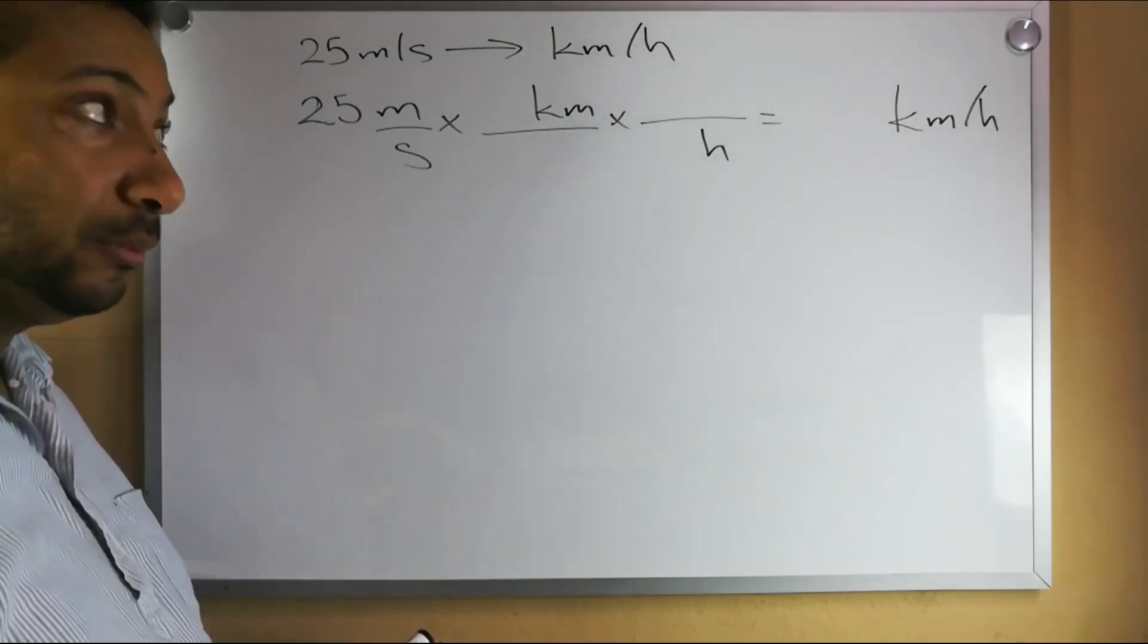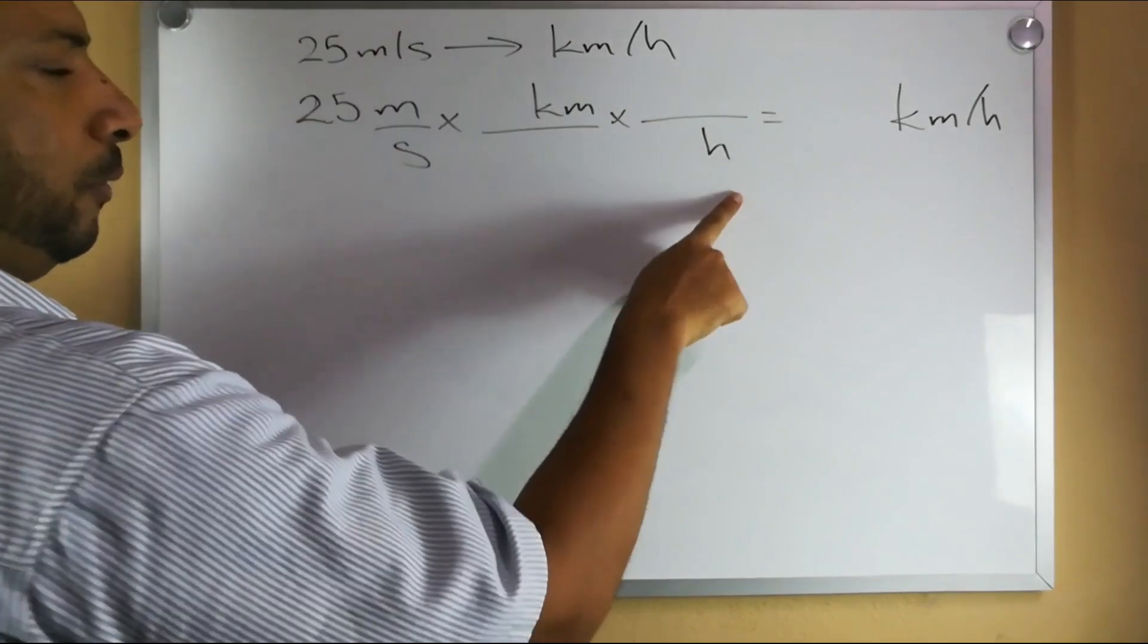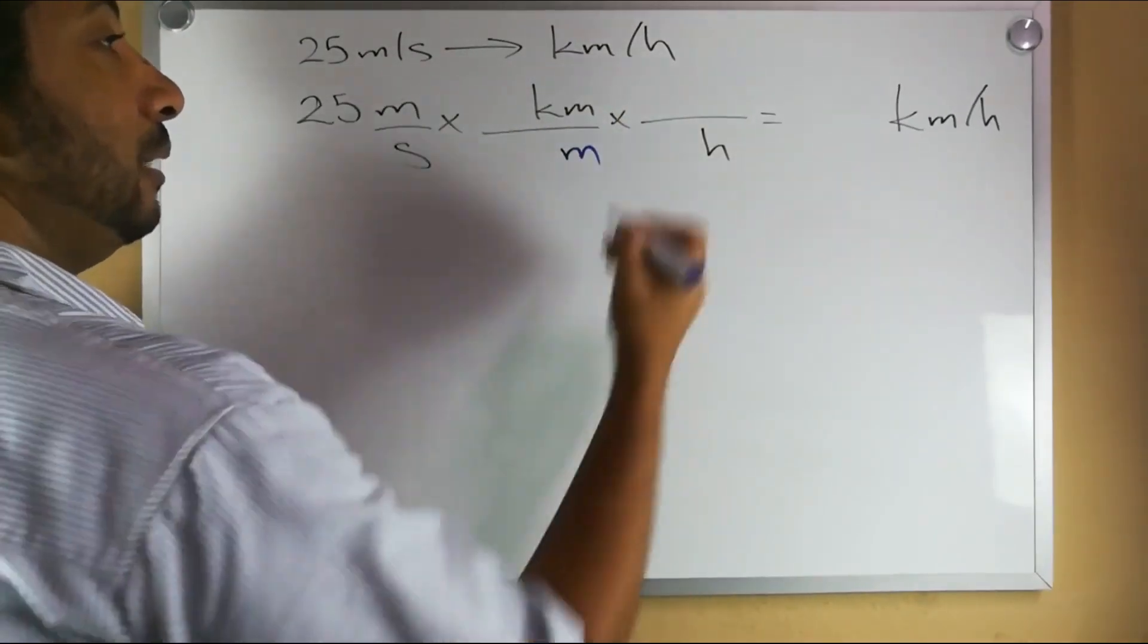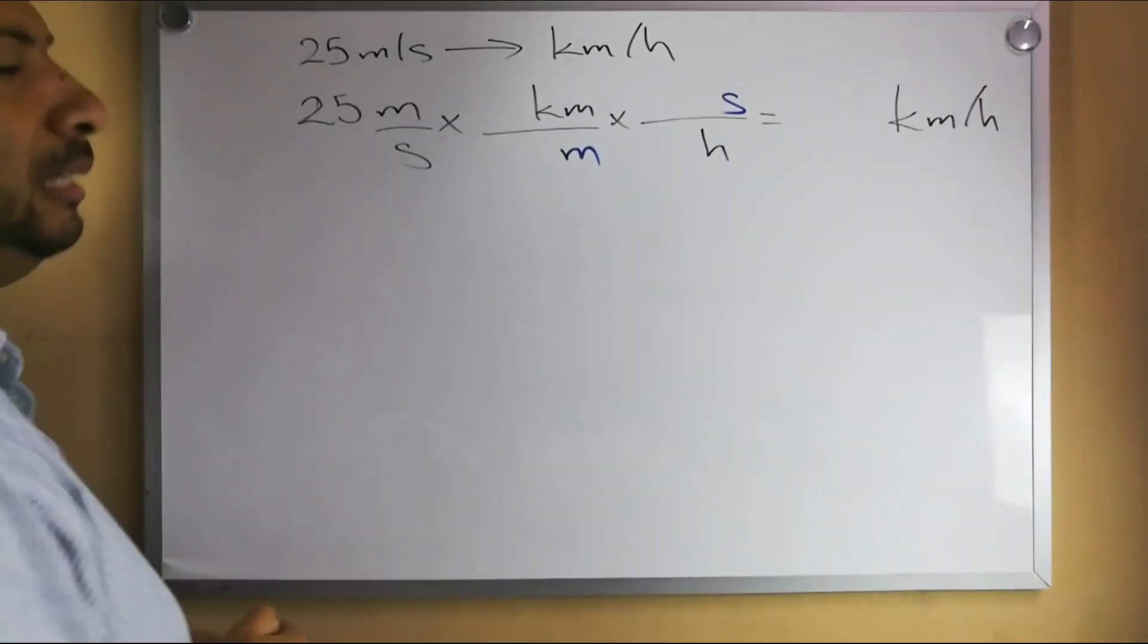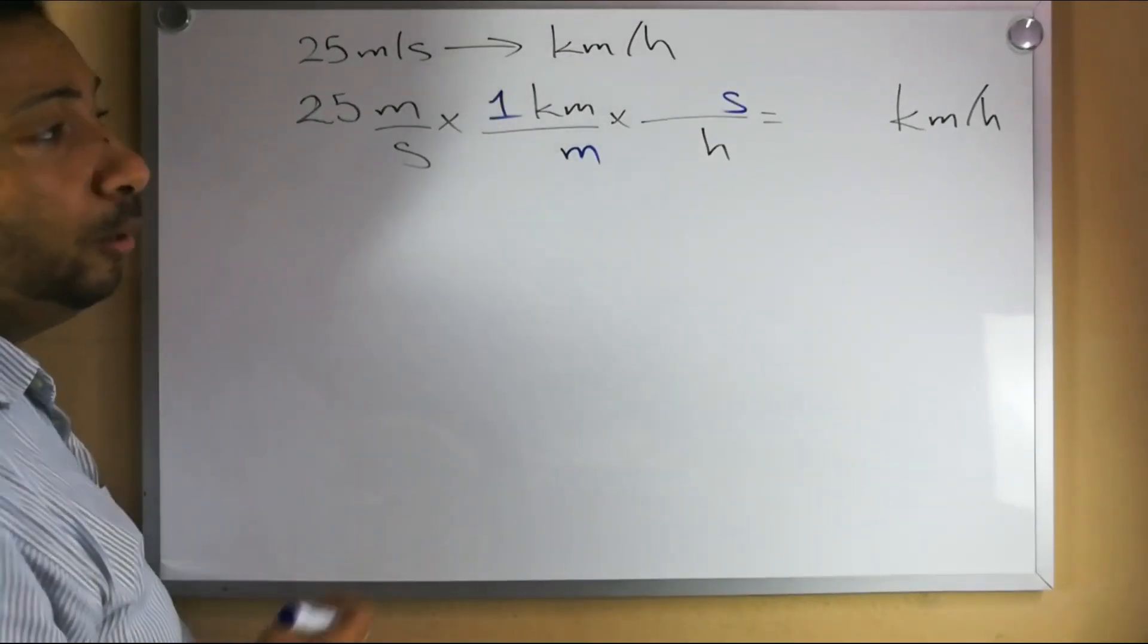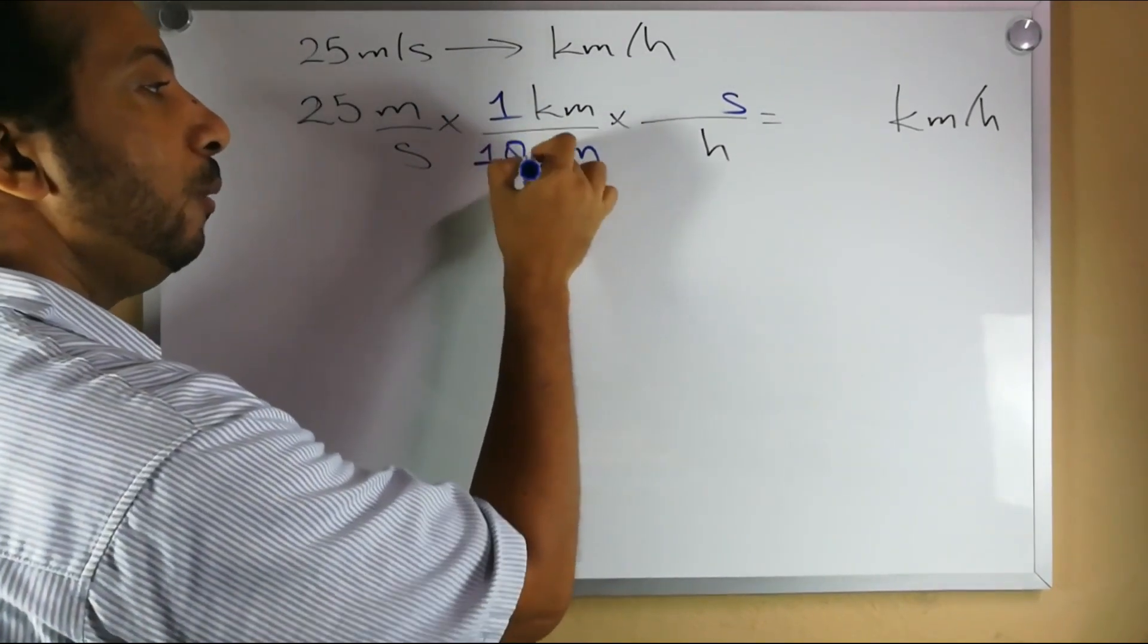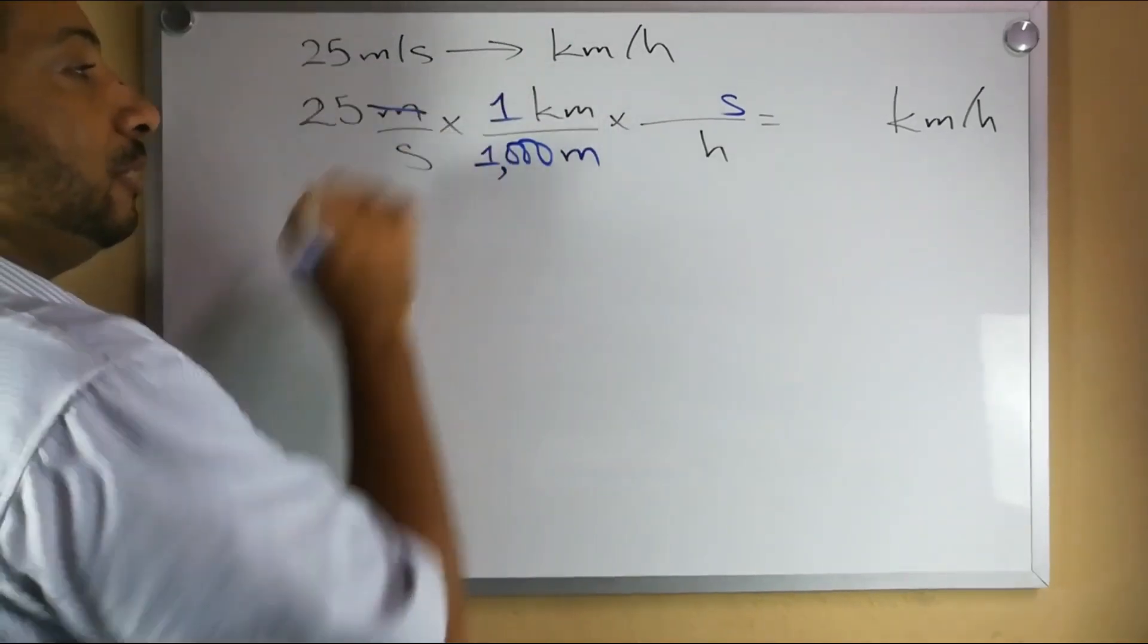Here when I look at this I want to have kilometers divided by hours, so that means when I do this multiplication I need meters and seconds to cancel out. How do I get those meters and seconds to cancel out? I say 1 kilometer is equal to what in meters. Well kilo means a thousand, so one kilometer is one thousand meters.